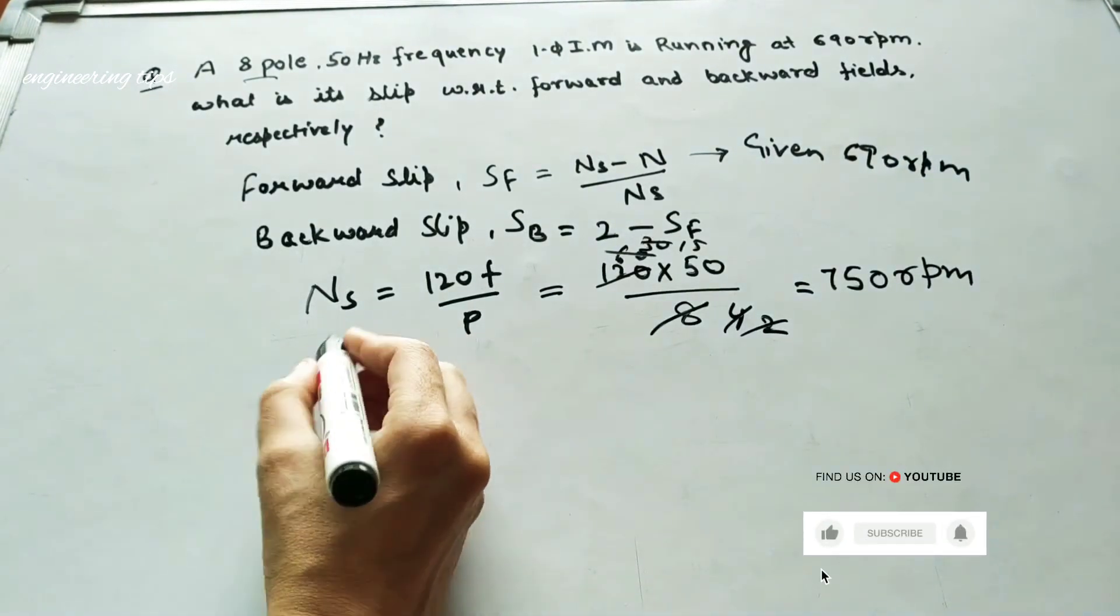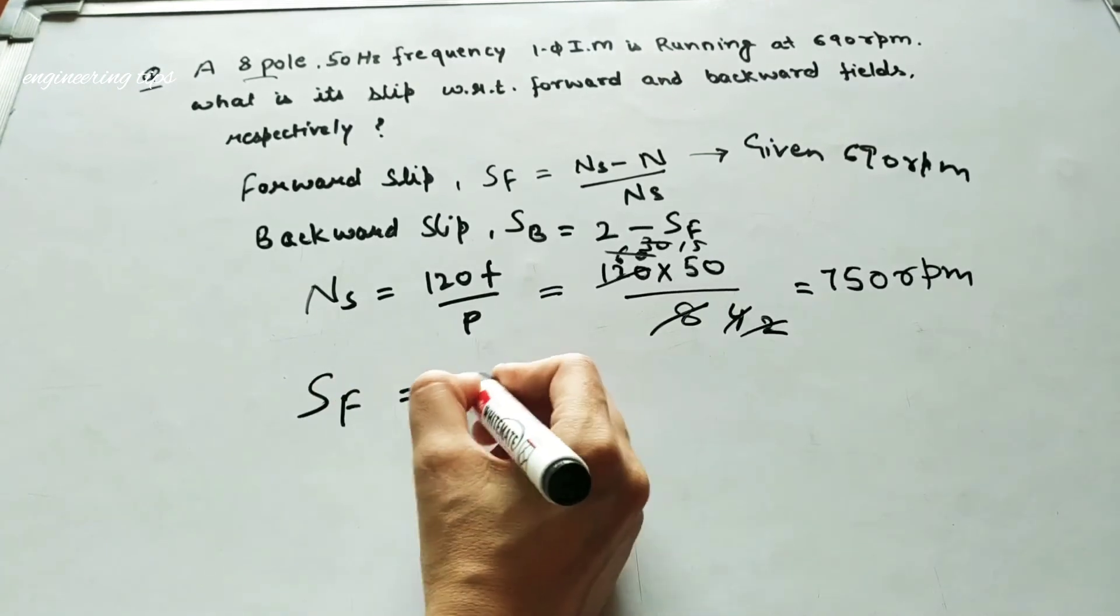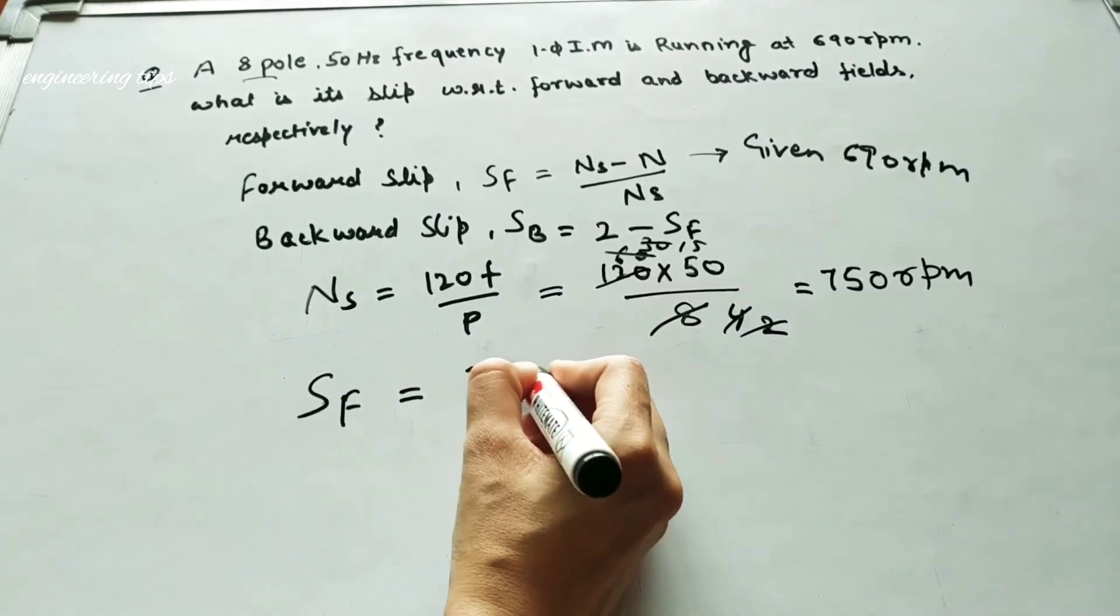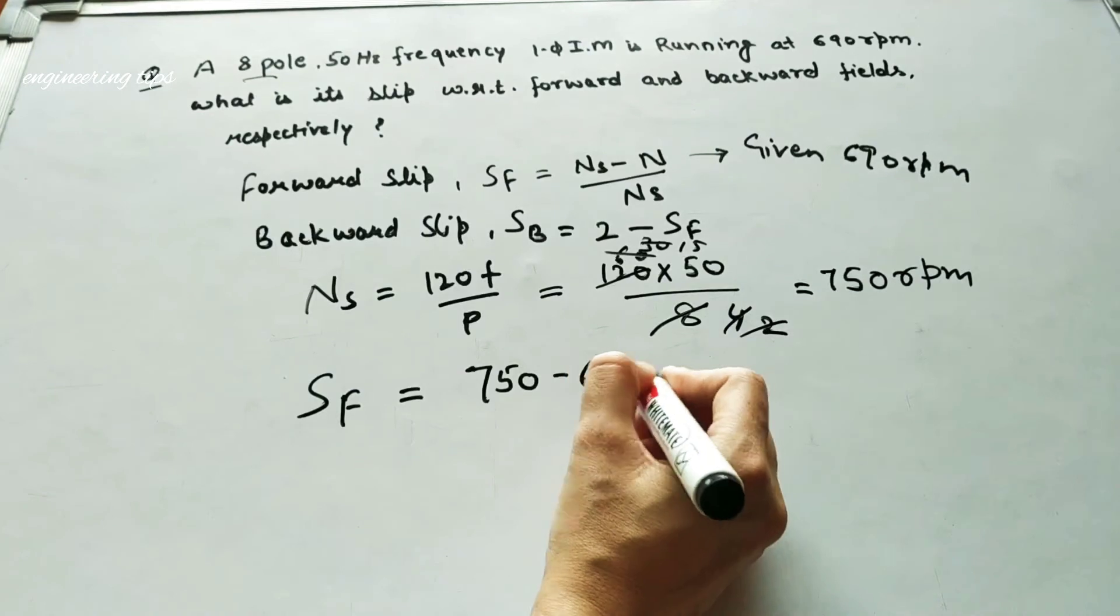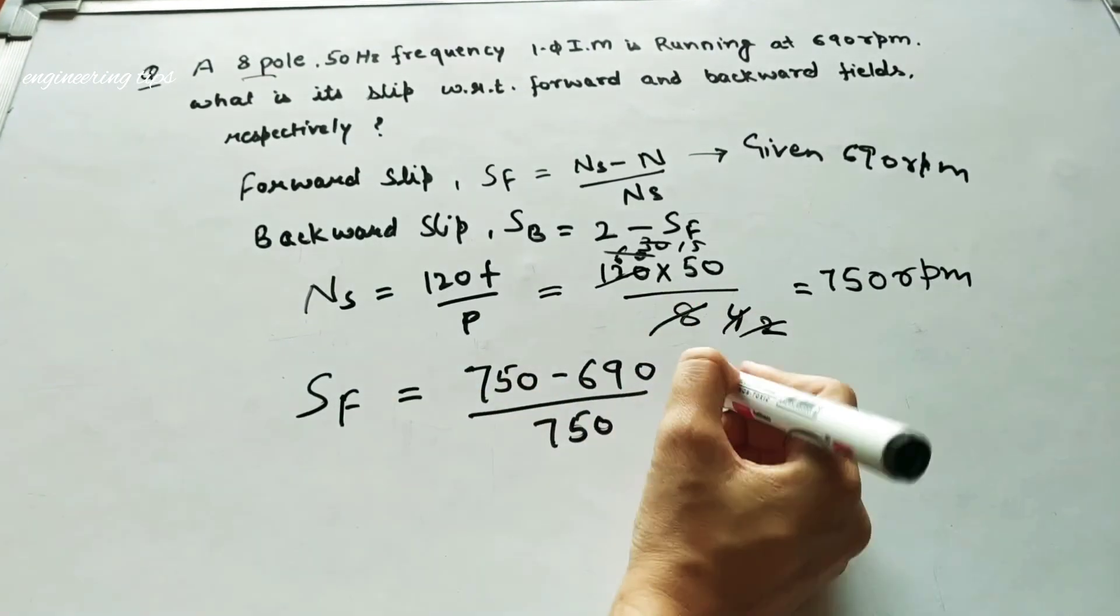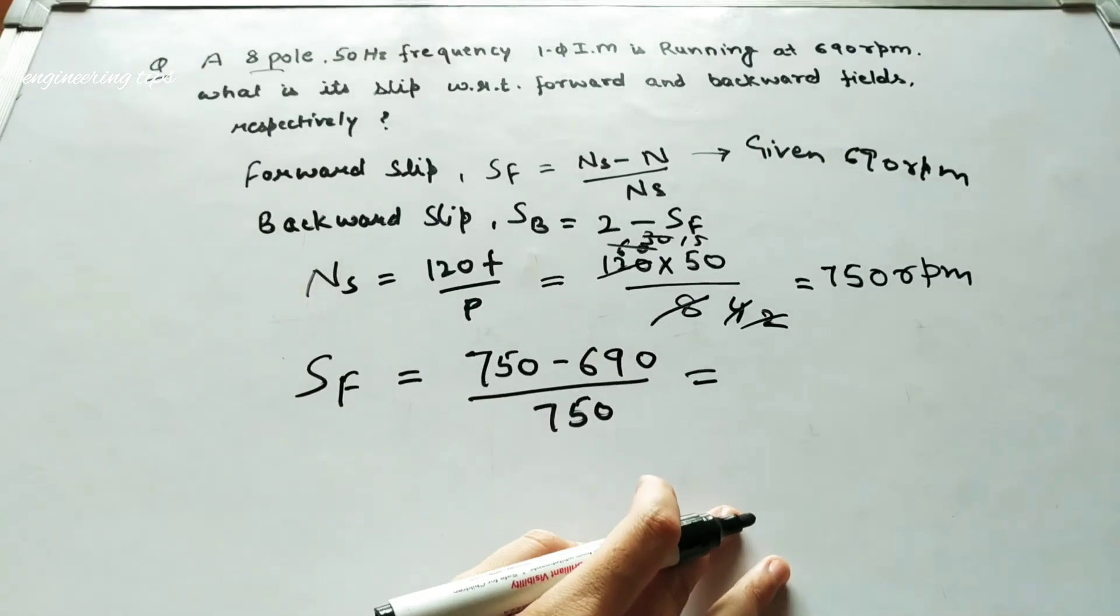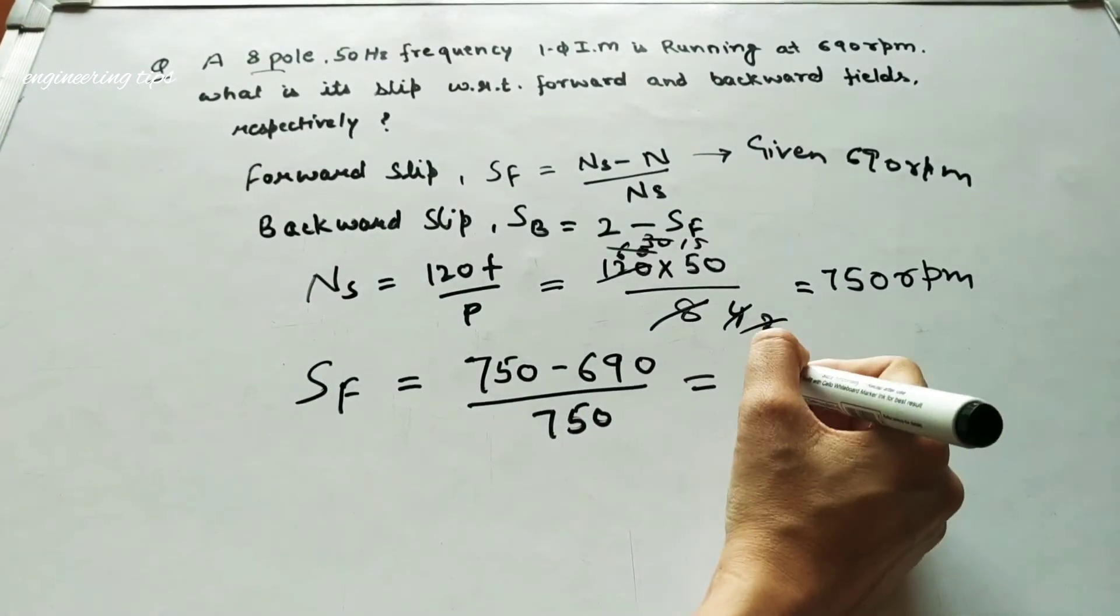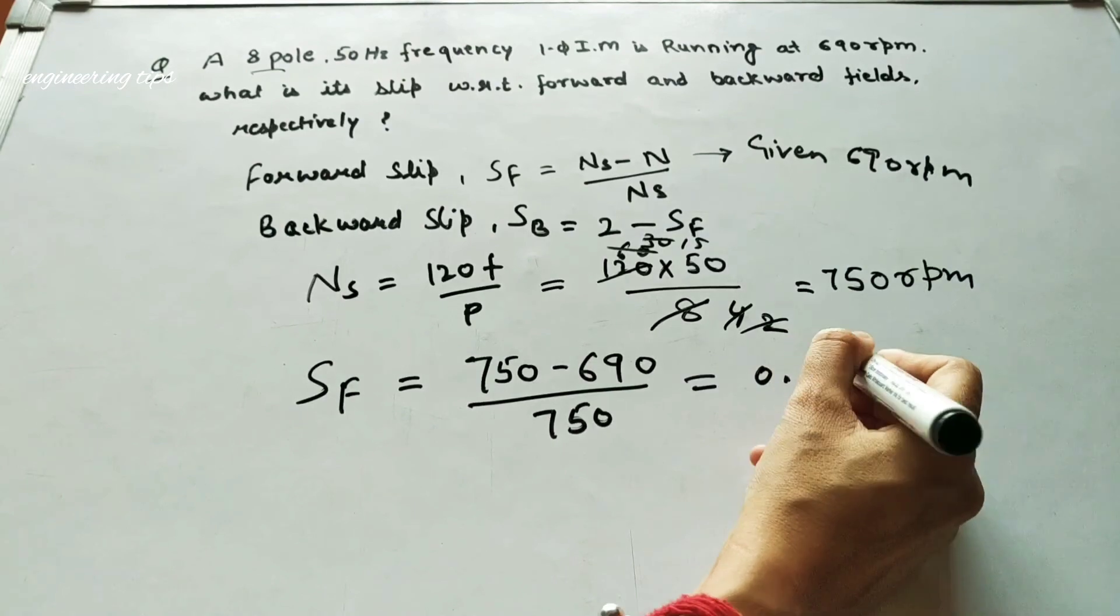Now, forward slip: SF equals 750 minus 690 over 750, which equals 0.08.